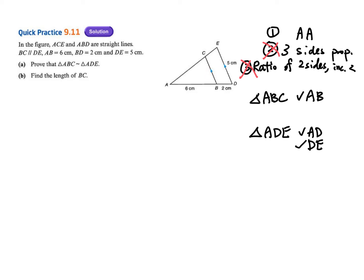If there are parallel lines, I can use F-angles (corresponding angles). Writing the F-angles means these angles are equal. I can also write angle A, which is common. So you can use two angles — AA. Then write: in triangle ABC and triangle ADE...